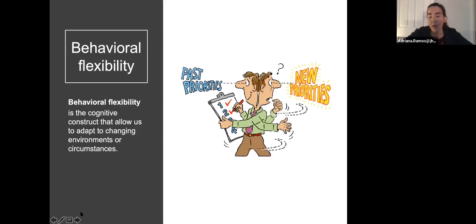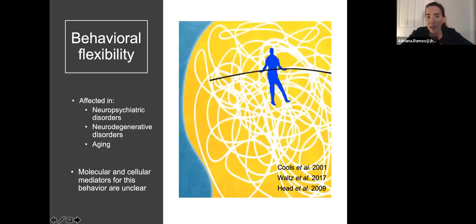I will start by introducing what is behavioral flexibility and why it's important. Basically, this is the cognitive construct that allows us to adapt to changing environment or circumstances. The reason I got initially interested in this construct is because it is known to be affected in many neuropsychiatric and neurodegenerative disorders, as well as during regular aging. Despite the importance of this cognitive behavior in so many diseases, the molecular and cellular mediators for this behavior are unclear.